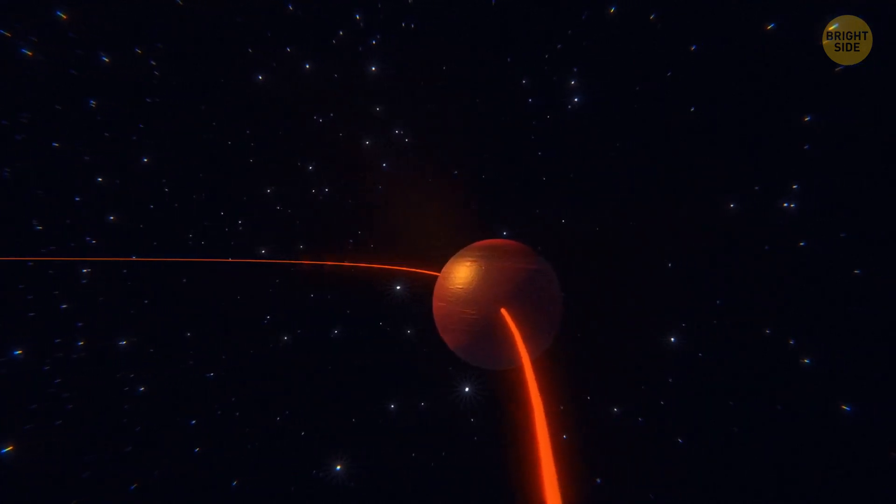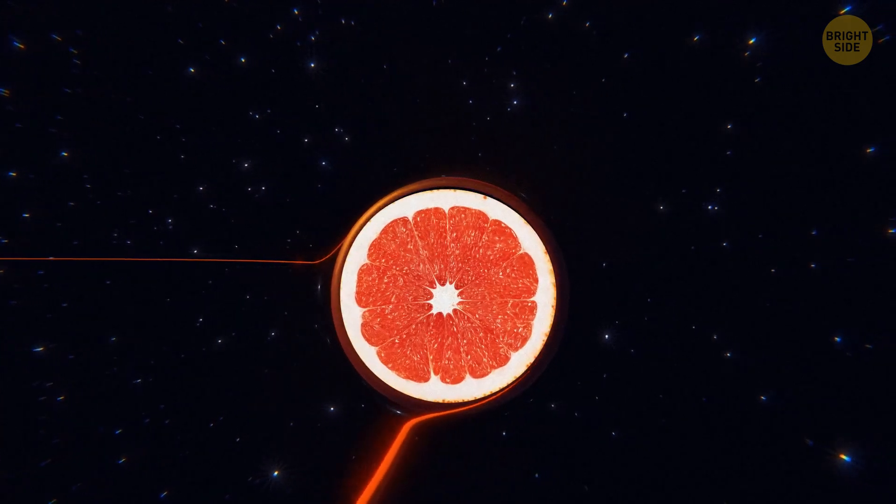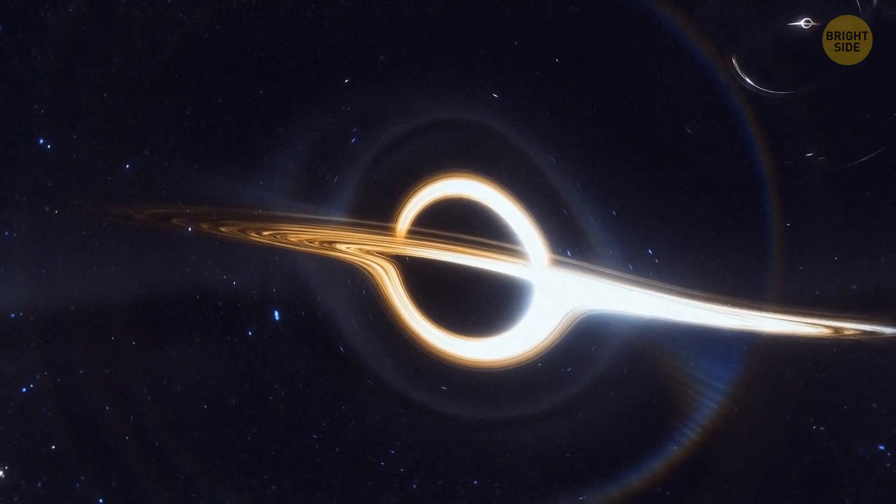Another interesting theory says that Planet 9 could actually be a black hole the size of a grapefruit that warps space in a similar way a large planet would.